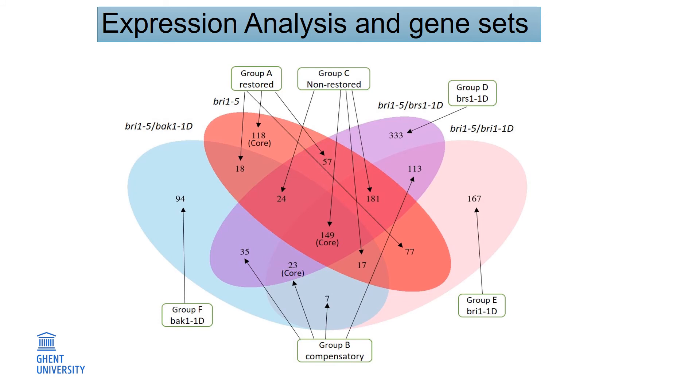And compensatory genes are genes that are not differentially expressed in BRI1, but being differentially expressed in at least two suppressor lines. The group C is also important because they describe the genes that are not fully recovered by suppressor lines.